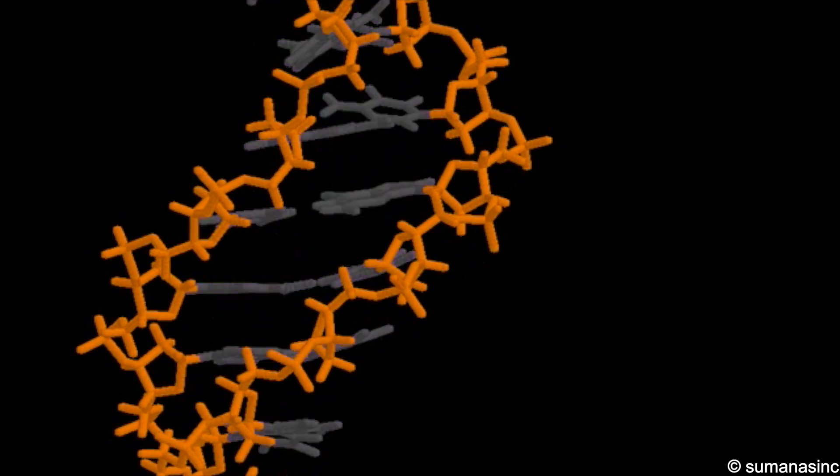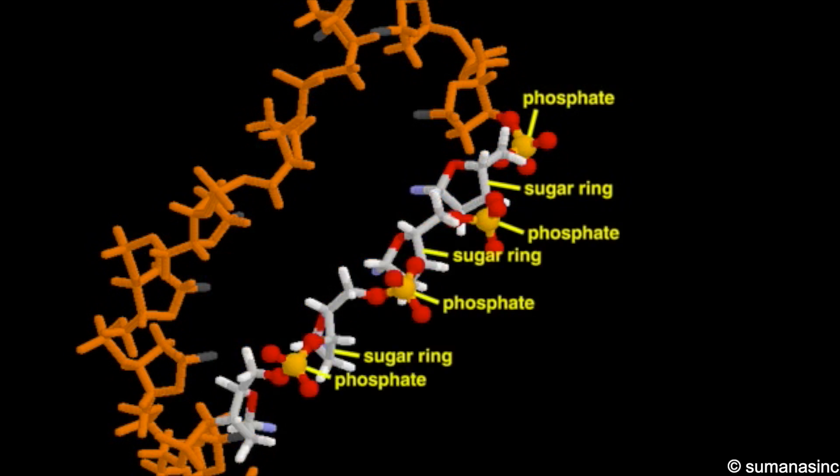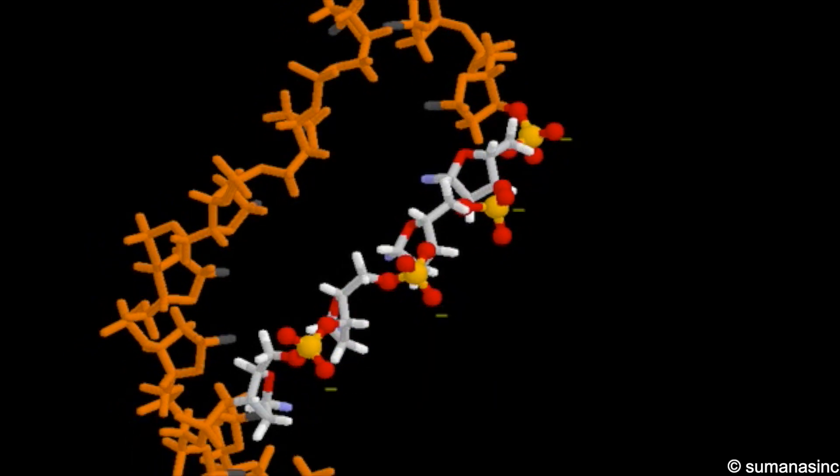The DNA backbone is assembled from repeating deoxyribose sugar units that are linked through phosphate groups. Each phosphate carries a negative charge, making the entire DNA backbone highly charged and polar.